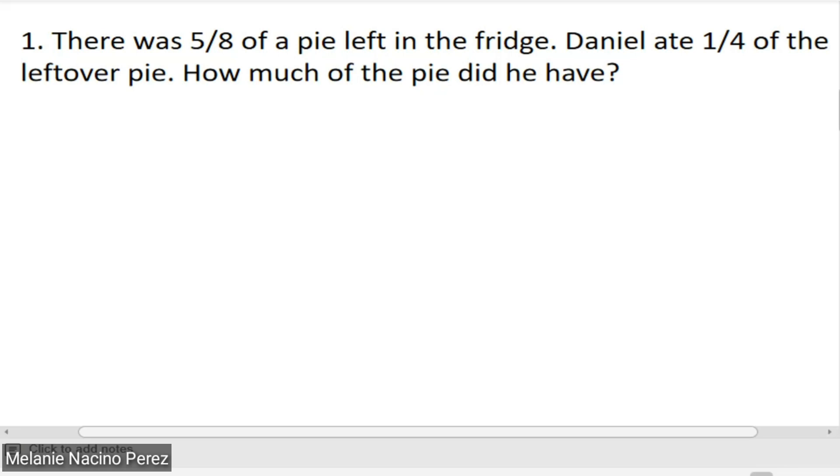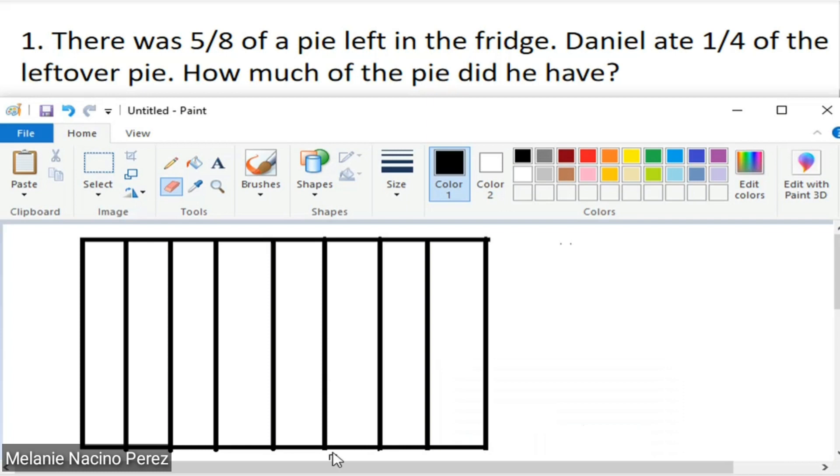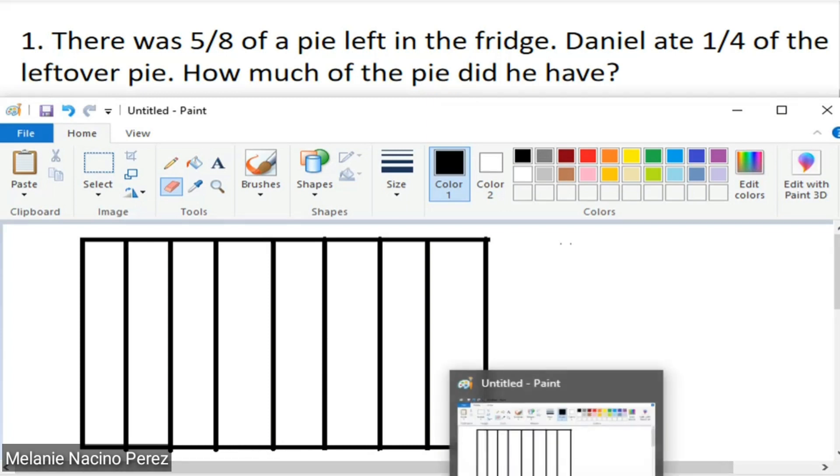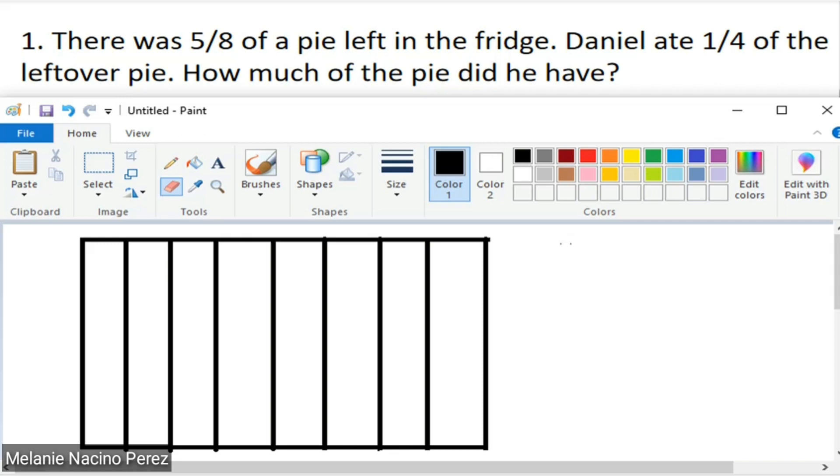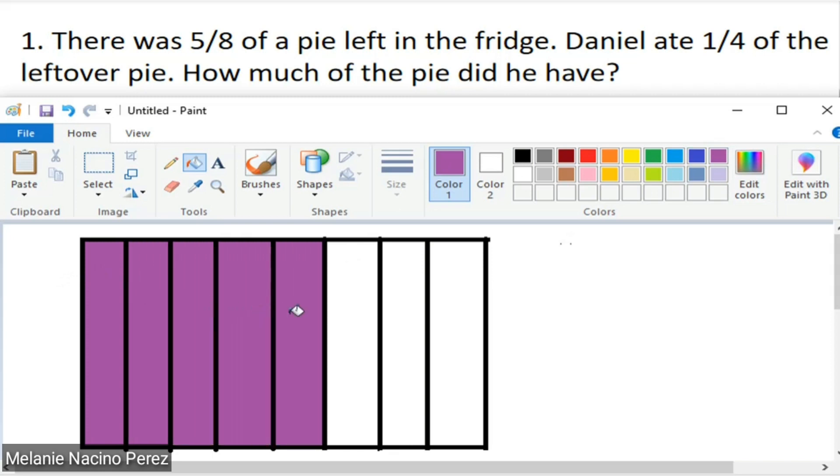The first problem: there was 5/8 of a pie left in the fridge. Daniel ate 1/4 of the leftover pie. How much of the pie did he have? What we're looking for here is 1/4 of 5/8. To visualize this, I made a rectangle and divided it into 8 equal parts, which represents our pie. I'll color the part that's left over, the leftover pie, which is 5/8.